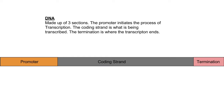DNA is arguably the most important part of gene expression. It is made of the promoter, which initiates transcription; the coding strand, which is being transcribed; and the termination, which ends the transcription.